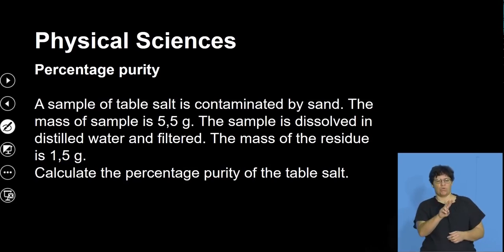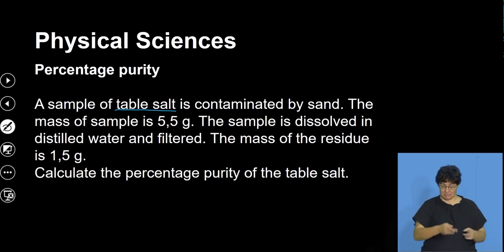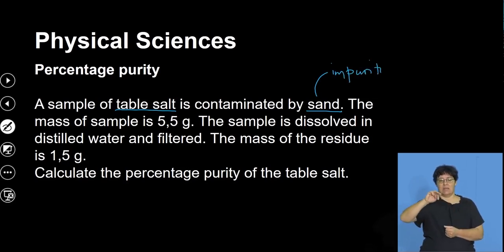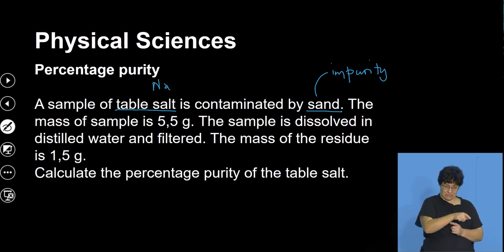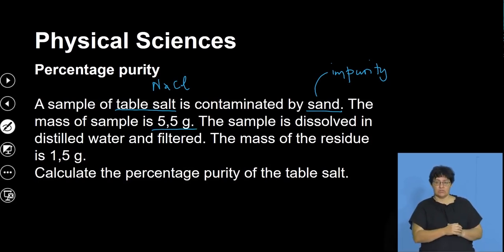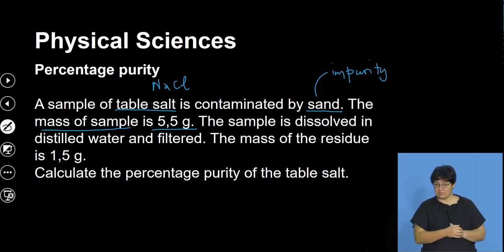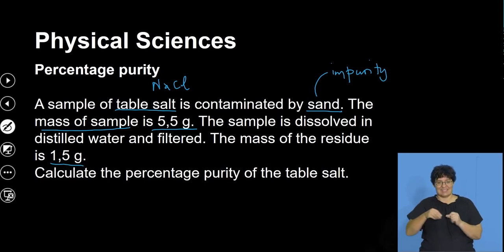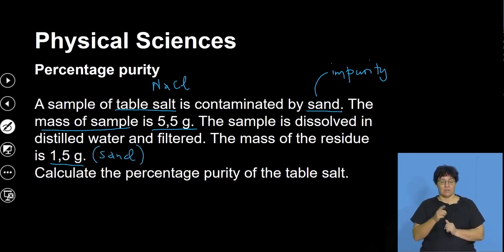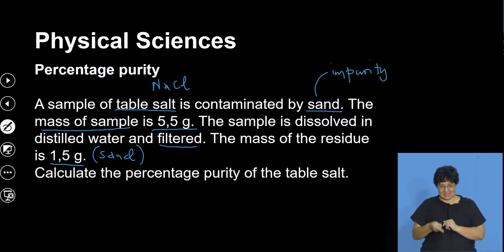Let's look at a practical example on percentage purity. A sample of table salt is contaminated by sand, so sand is our impurity and table salt — sodium chloride — is our pure substance. The mass of the sample is 5.5 grams, which is the total mass. The sample is dissolved in distilled water and filtered. The mass of the residue is 1.5 grams, which is the mass of the sand, since sand is insoluble in water. All the table salt dissolves, and what gets filtered off is the impurity.